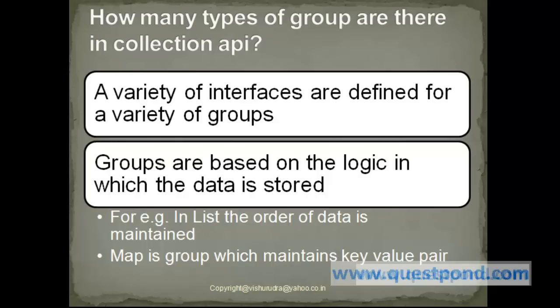For example, in the case of List, which is a part of the Java Collection API, the order of data is maintained. Map is another form of collection in which we store the value in key-value pairs.